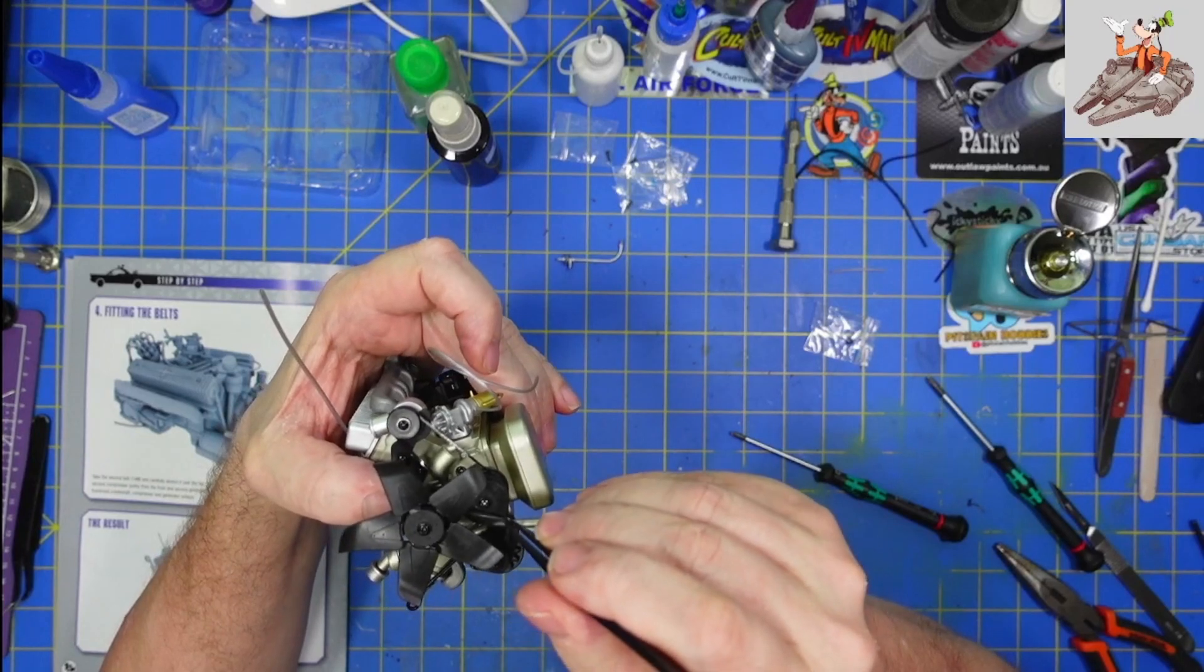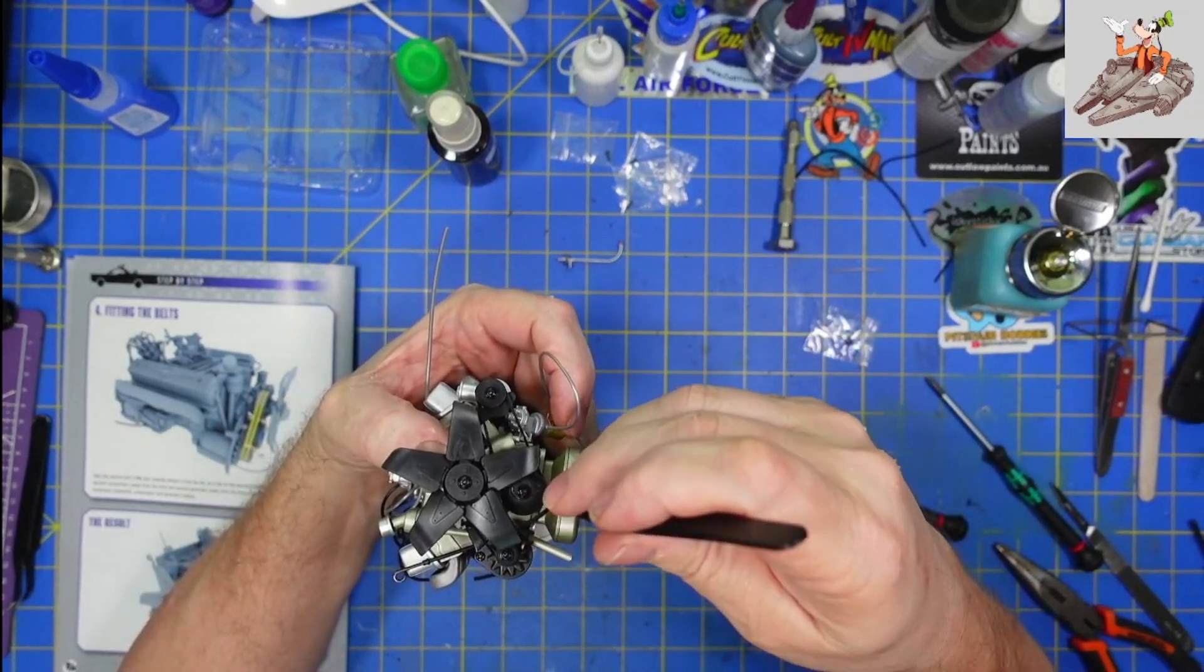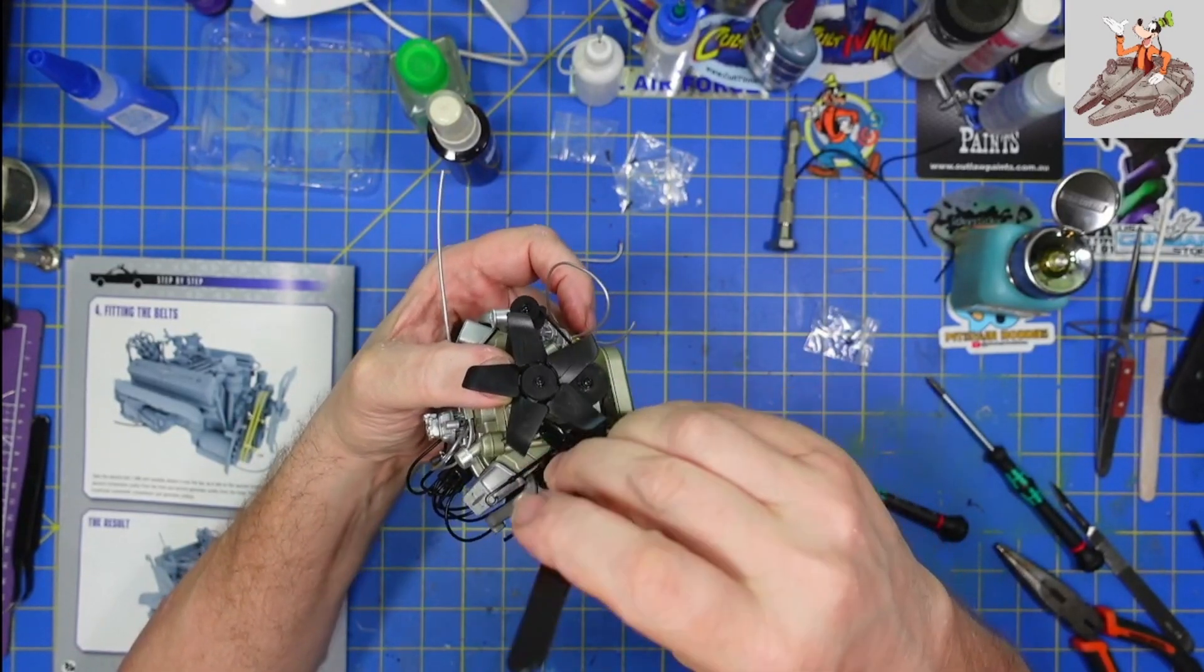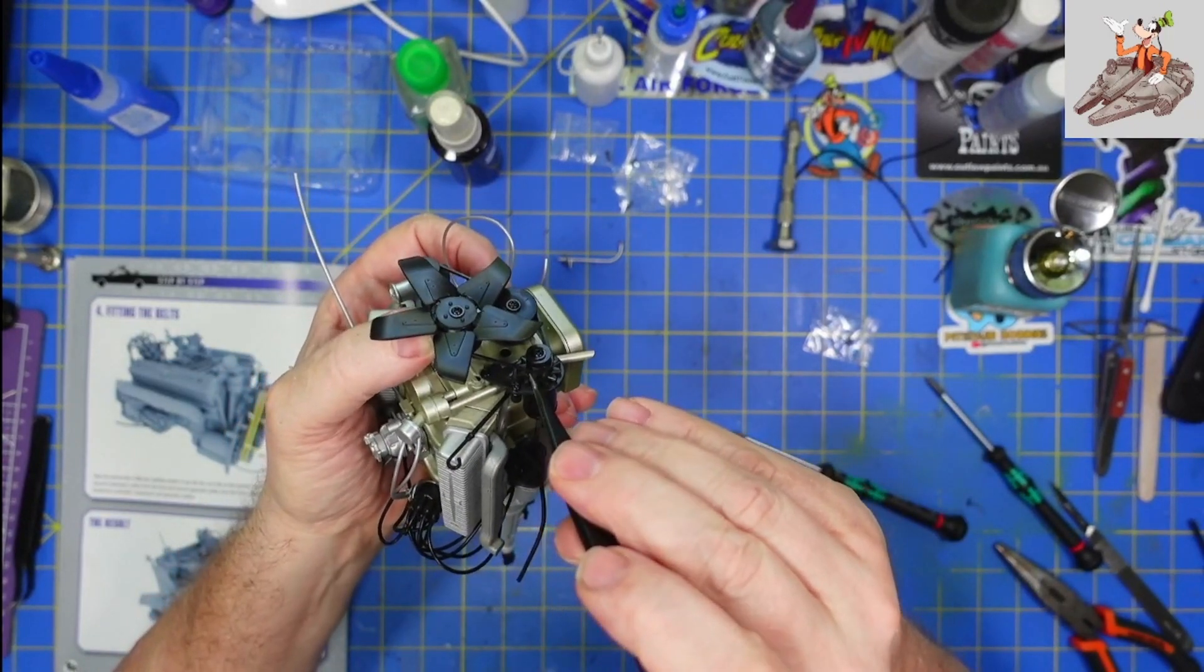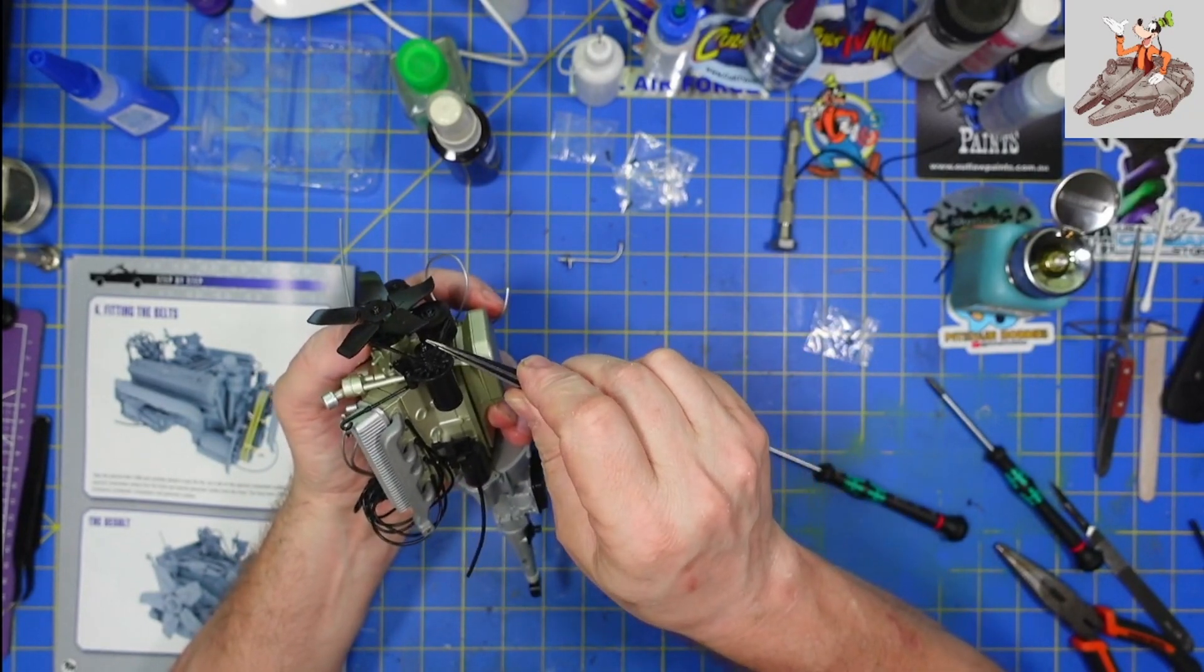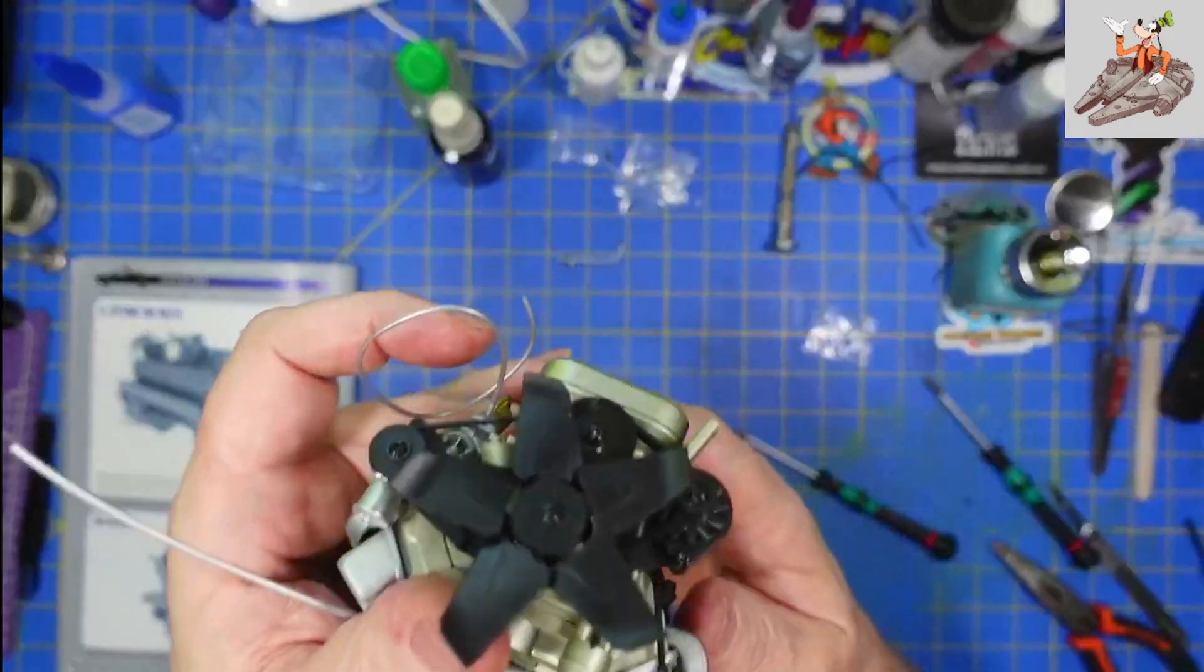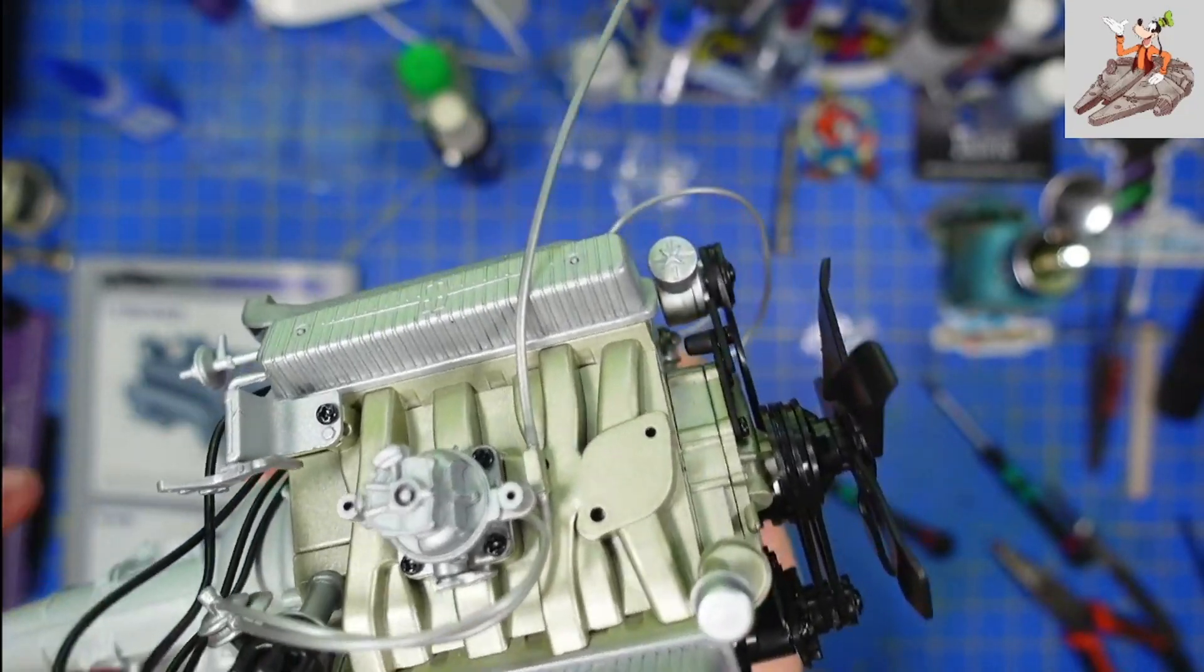So, let's see if we can get it around the crankshaft. Nope. It popped loose. Try this again. Get it around the generator. It's back pulley on the generator. Not too far. Come on. Coaxing it. There we go. There are all the pulleys in place.